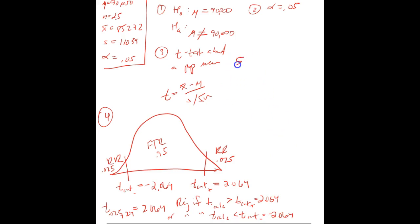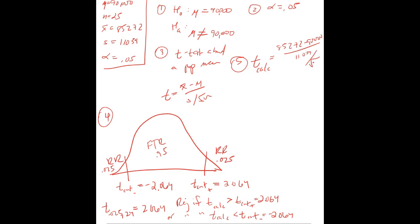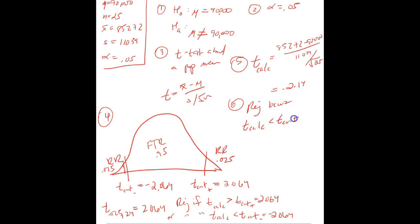Step five — calculate the actual value. t-calc equals x-bar 85,272 minus mu 90,000, divided by s 11,039 divided by square root of 25. Our number ends up being negative 2.14. We determine where that falls: it's just to the left of t-crit negative, so it's just in the rejection region. We reject because t-calc of negative 2.14 is less than t-crit of negative 2.064.